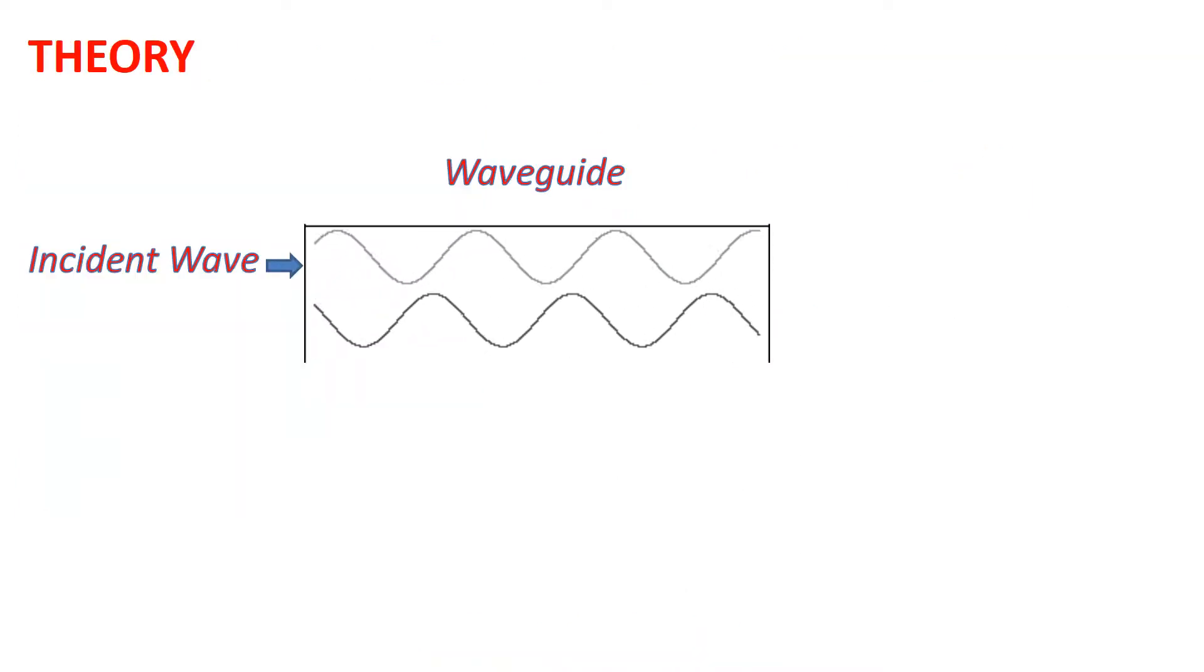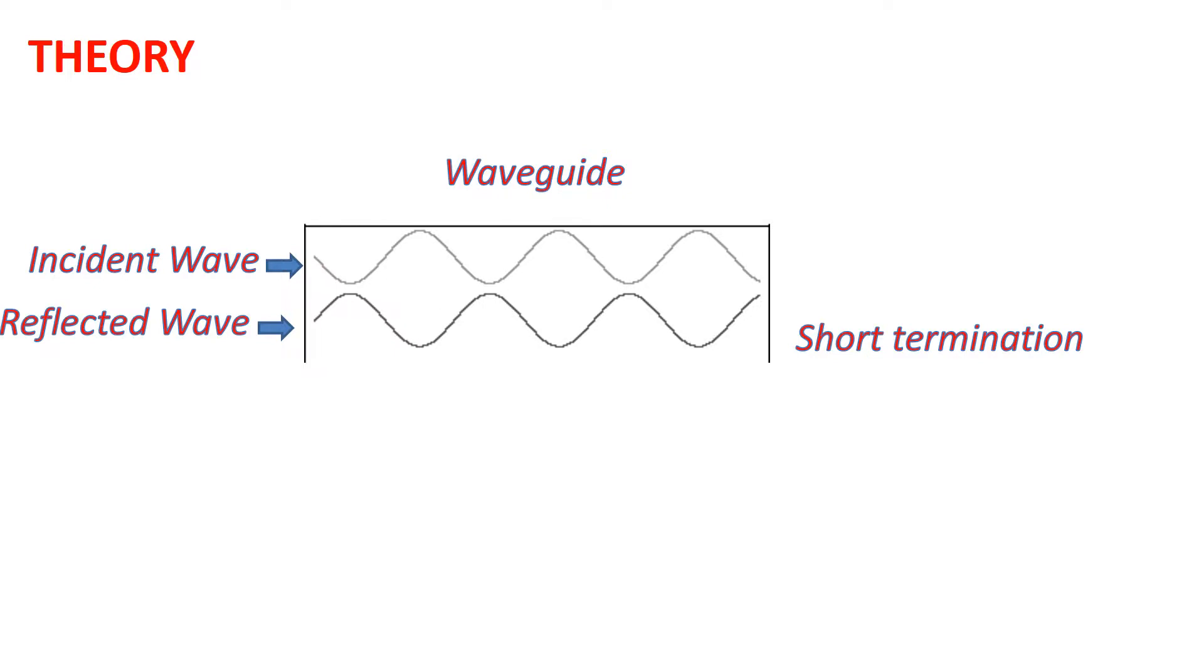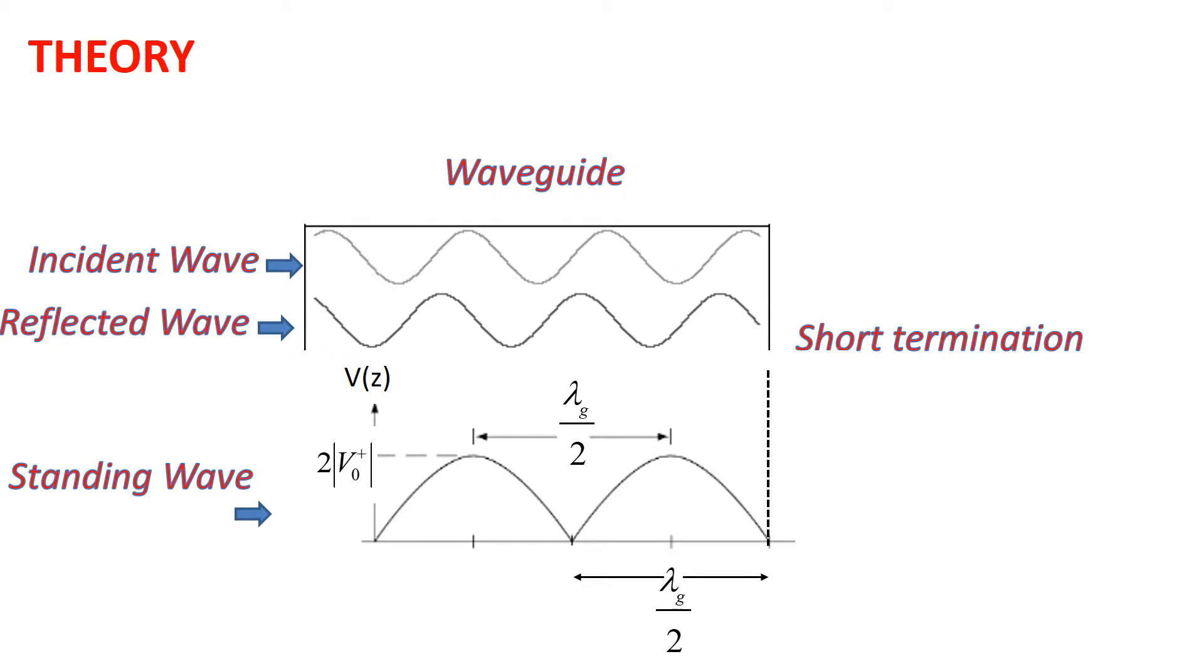In the experimental setup, we end the waveguide with a short termination. The constructive and destructive interferences between forward and reflected waves create a standing wave. The pattern presents a succession of maxima and minima with a repeating space with a period of length half a wavelength.